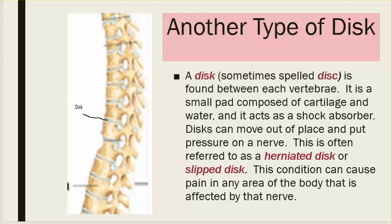A disc, sometimes spelled D-I-S-C, is found between each vertebra. It is a small pad composed of cartilage and water, and it acts as a shock absorber. Discs can move out of place and put pressure on a nerve. This is often referred to as a herniated disc or slipped disc.